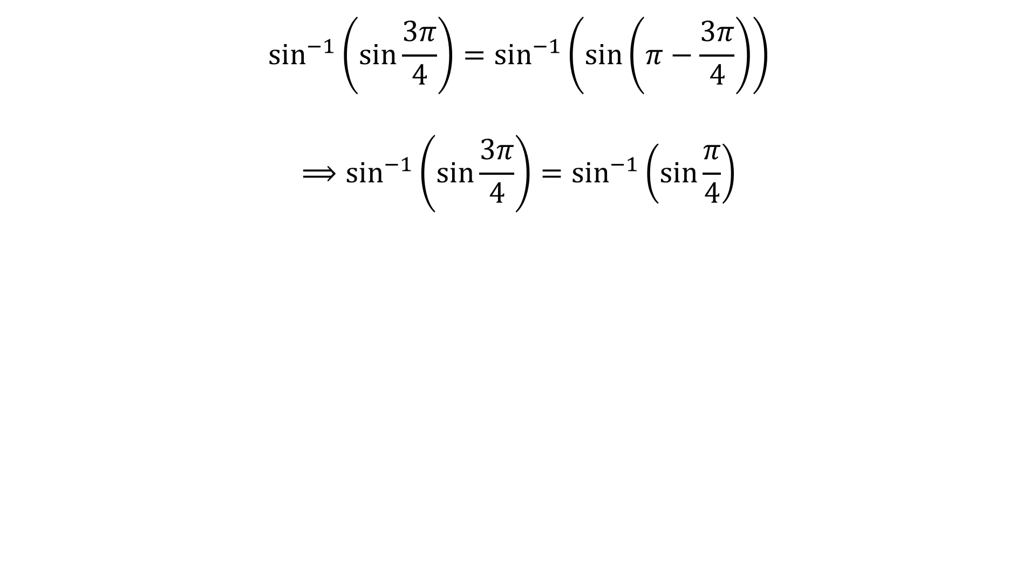So, inverse of sine of sine of 3 times pi upon 4 is equal to inverse of sine of sine of pi upon 4.